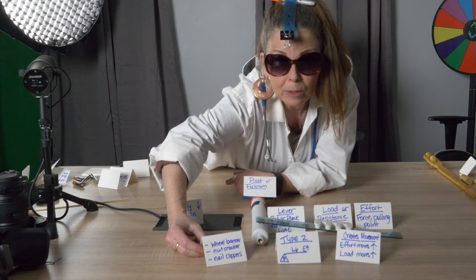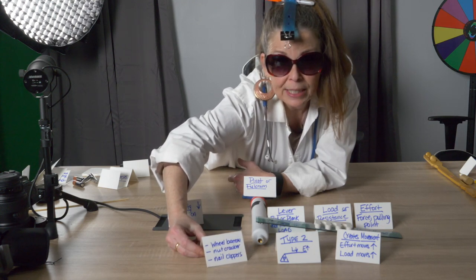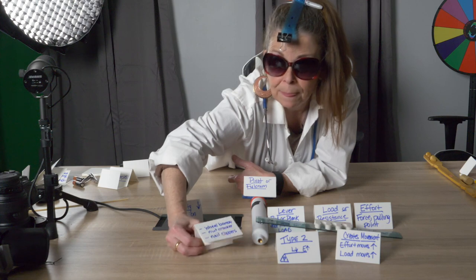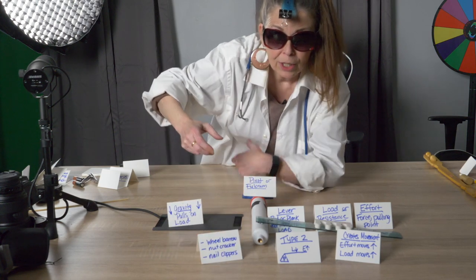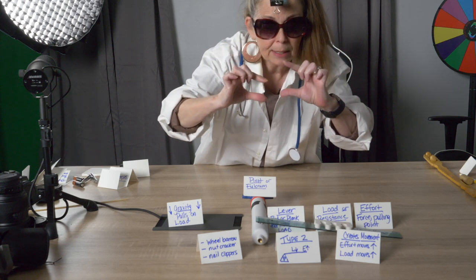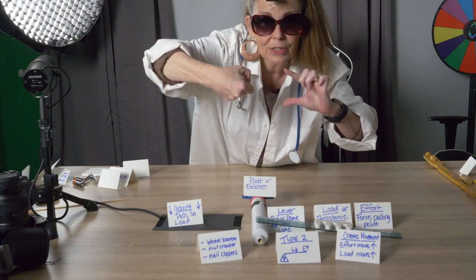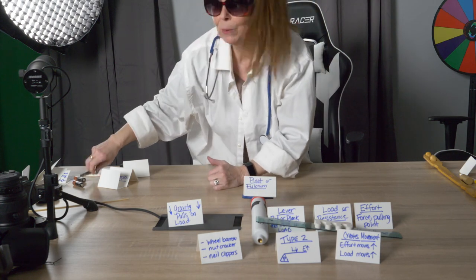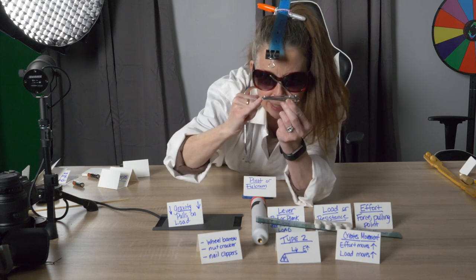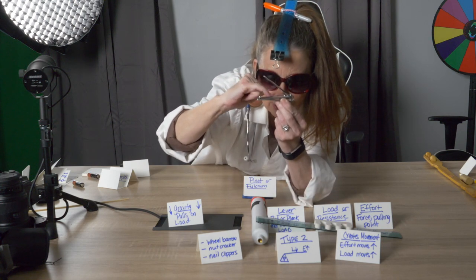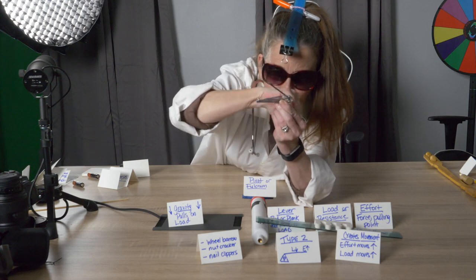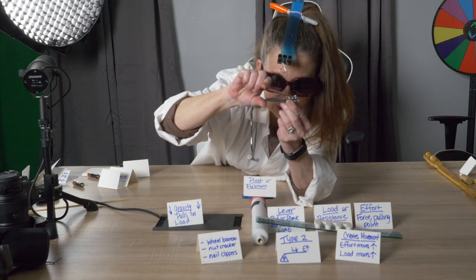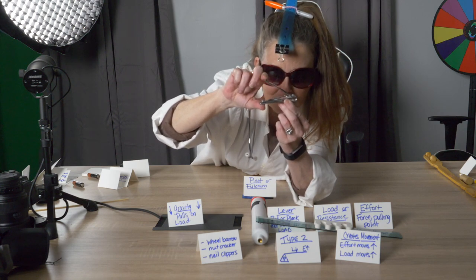Let's look at examples of second class levers you already know. Have you ever used a wheelbarrow, where you lift one end with the rocks in the middle? That's a second class lever. A nutcracker where you put the nut in the middle and squeeze the two parts together — that's a second class lever as well. And the nail clipper: the pivot point is way over here, and the push comes from the middle — that's a second class lever too.